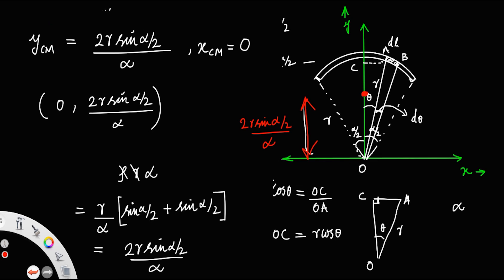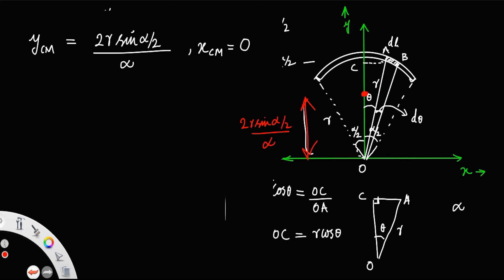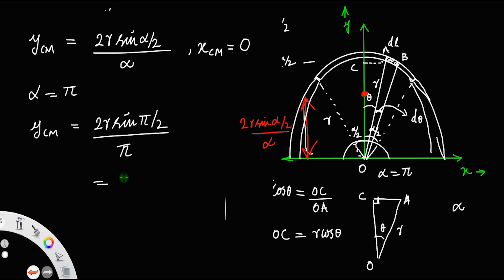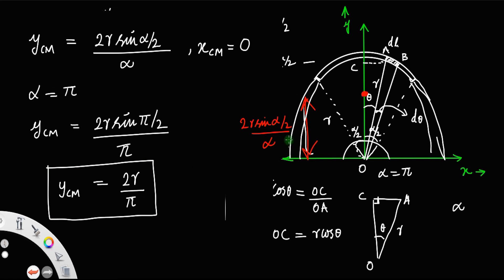Now let us consider the special case where the arc is a semicircle. For a semicircle, alpha equals 180 degrees, or pi radians. Substituting alpha equals pi: y_cm equals 2R sin(pi/2) divided by pi. Since sin(pi/2) equals sin 90° equals 1, the answer is 2R divided by pi. That is the y_cm for a semicircular arc.